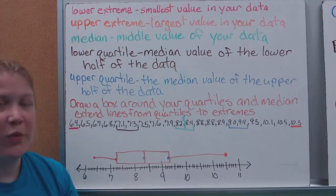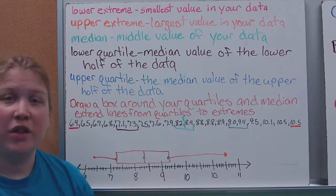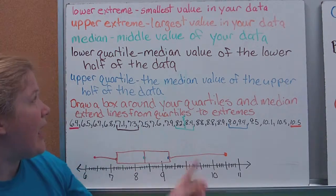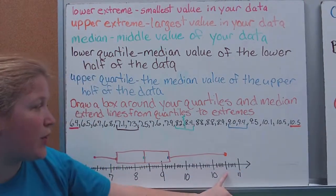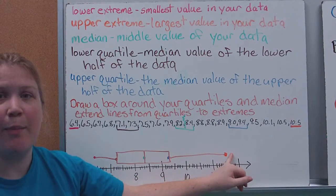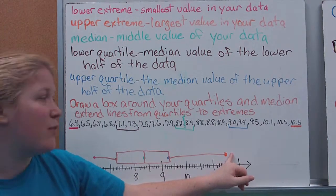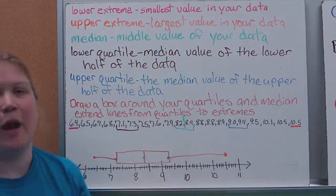We have an upper extreme, which is, again, like it sounds like, the greatest value in our data set. So again, these are in order, so I marked it here on the end. 10.5 is my highest number. So again, on my graph, I put a dot above it on my number line to mark 10.5, my upper extreme.